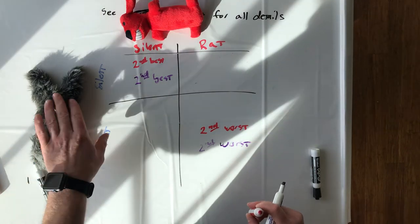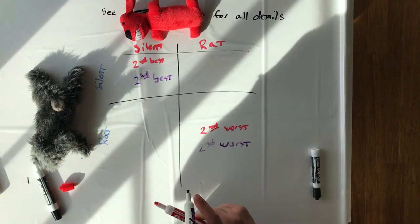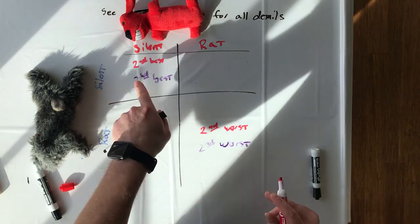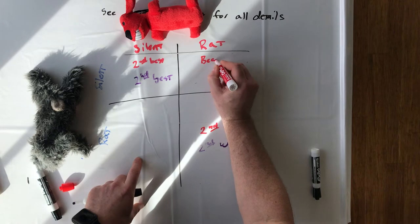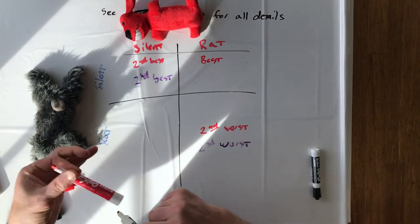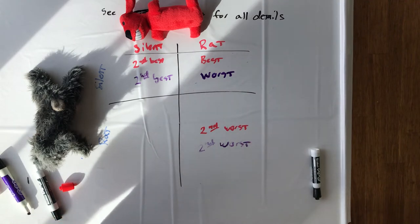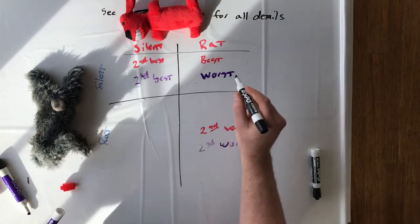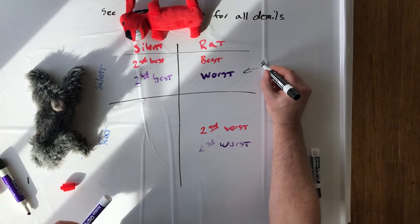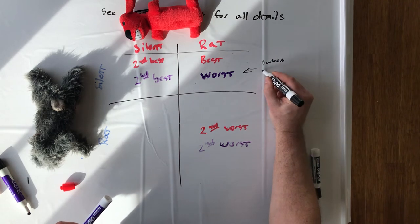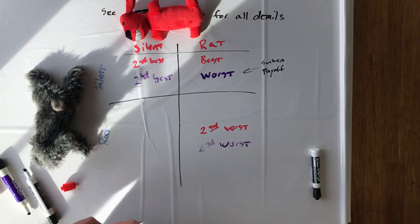If Rabbit keeps her mouth shut and Red Dog rats her out, that is going to be the worst case scenario for Rabbit. So Rabbit's staying silent, Red Dog is ratting. So that's Red Dog's best and this is Rabbit's worst. And this outcome for Rabbit is called the sucker's payoff. It's a kind of terrible name, but you know, what else?